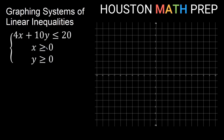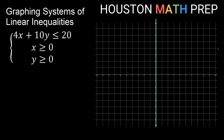If I think about x is greater than or equal to 0, just the equal part first, x equal to 0 gives us the y-axis. The greater than part means I want x values greater than that line, so I go to the right because x gets bigger toward the right. We need to be to the right of this line.